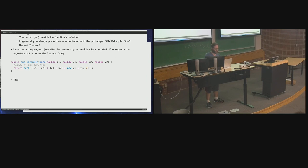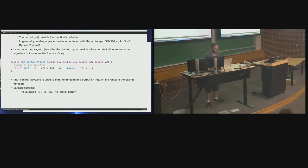The return keyword is used to end the function and output the result to the calling function. A note about variable scoping: the variables x1, y1, x2, y2 are all parameter variables. They were never explicitly declared — they existed because they were parameters, part of the function signature. We didn't have to do anything special with them to use them in the function body.